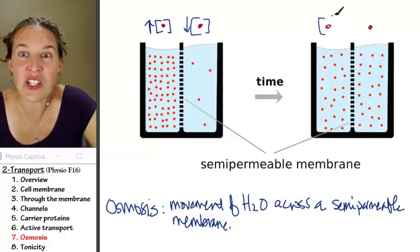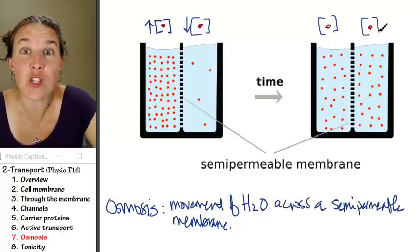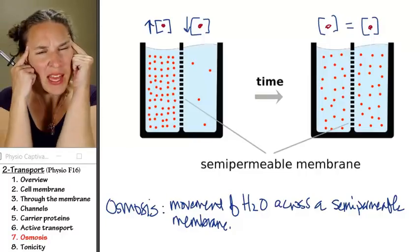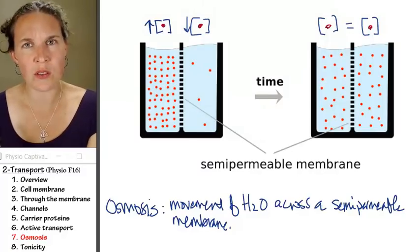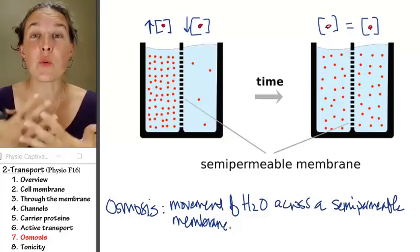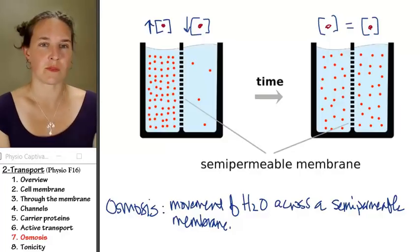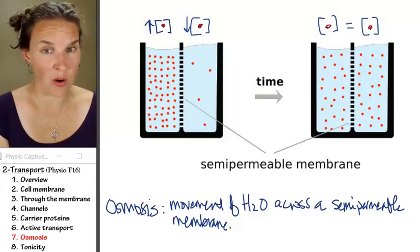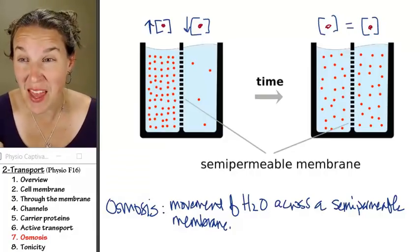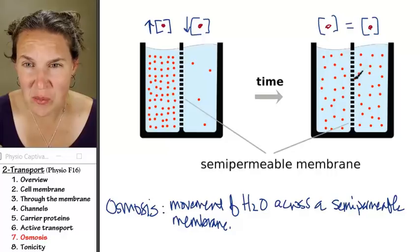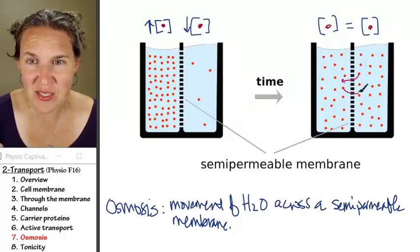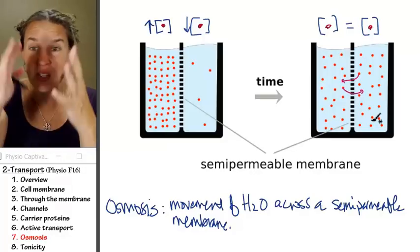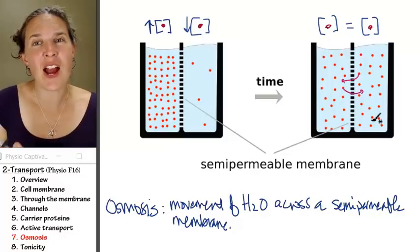And then what happens to my concentration of red dots after the red dots diffuse? The concentrations are equal, right? When the concentration of red dots is equal, when the solute particles have equal concentrations on both sides, do they stop moving? No, that would mean you would freeze at absolute zero if they stopped moving. They're totally still moving.